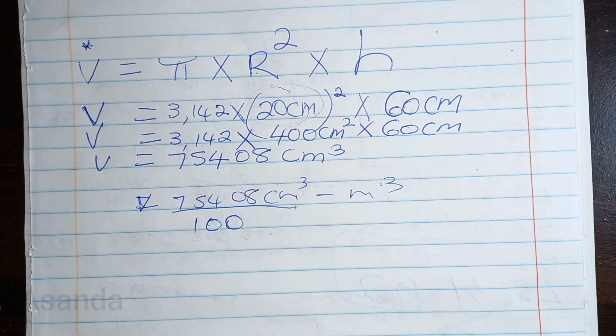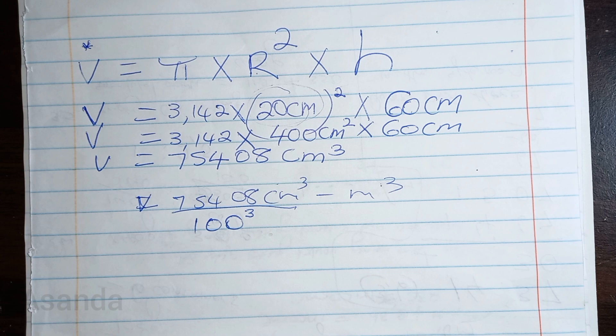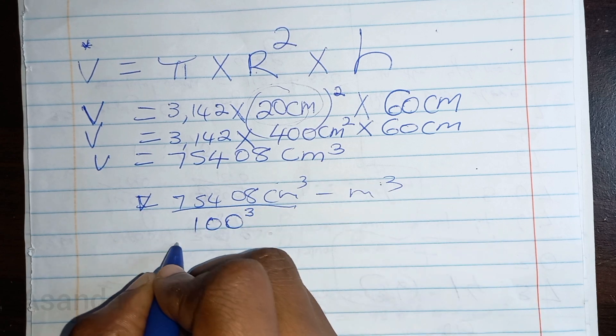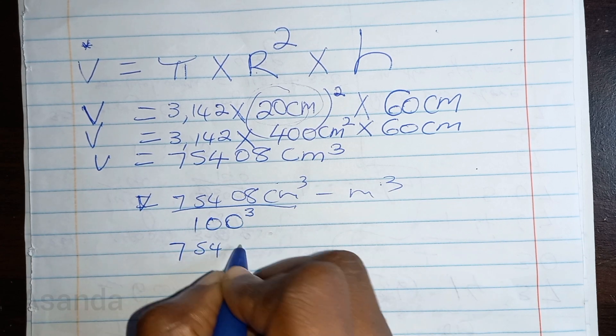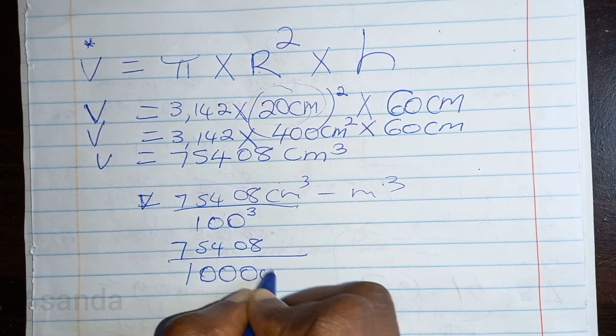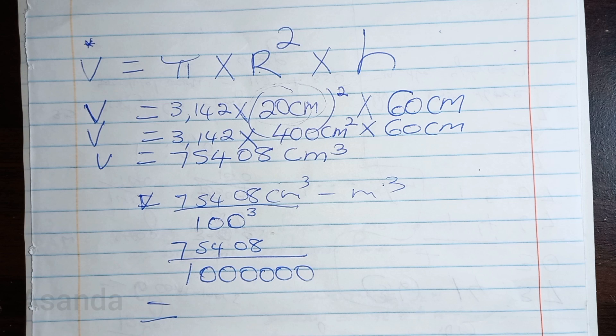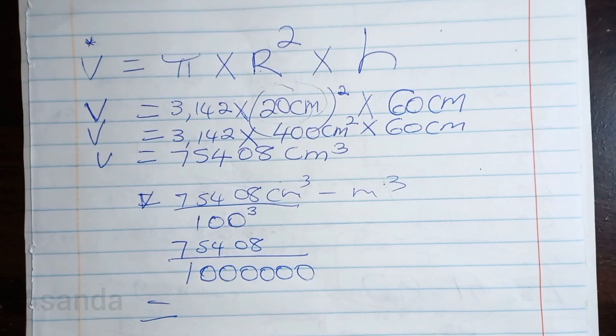I am not converting centimeters—I'm converting centimeters cubed. Therefore, my 100 is to the power of three. You calculate 100 times 100 times 100, and that is a million. So that would be 75,408 divided by a million. And then you get your answer and you're done.